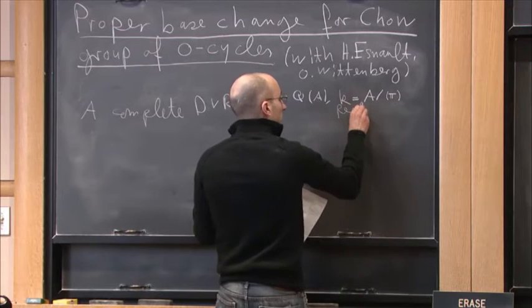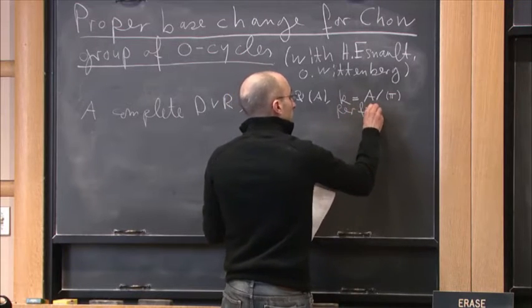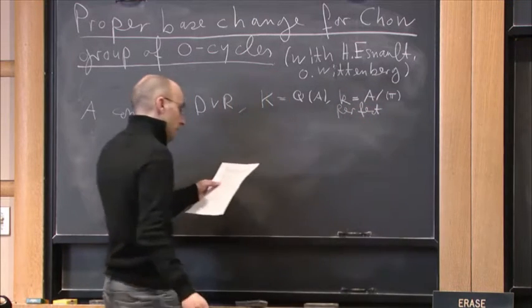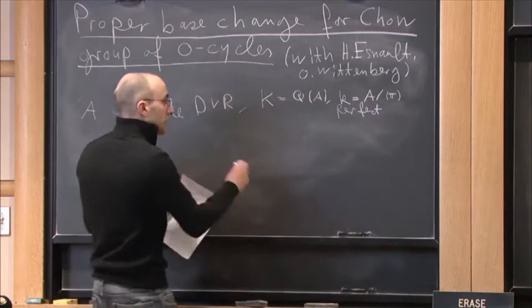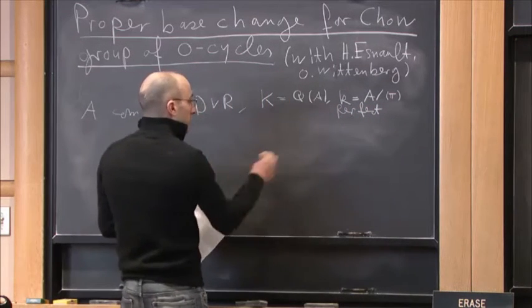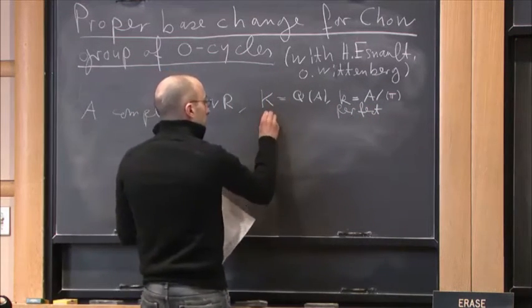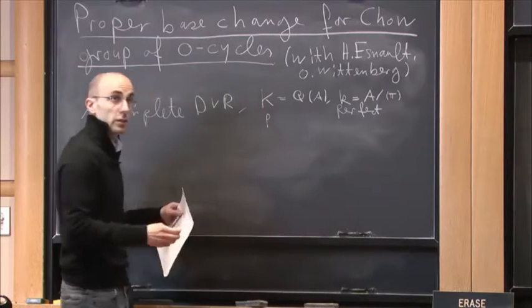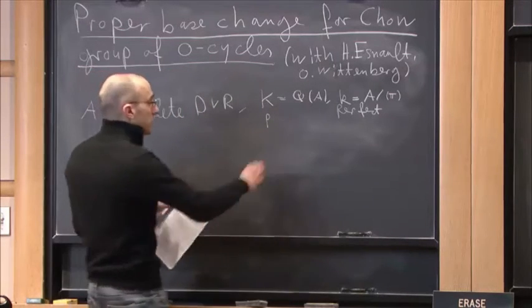We denote by p the characteristic of the residue field k, or better to say the exponential characteristic.